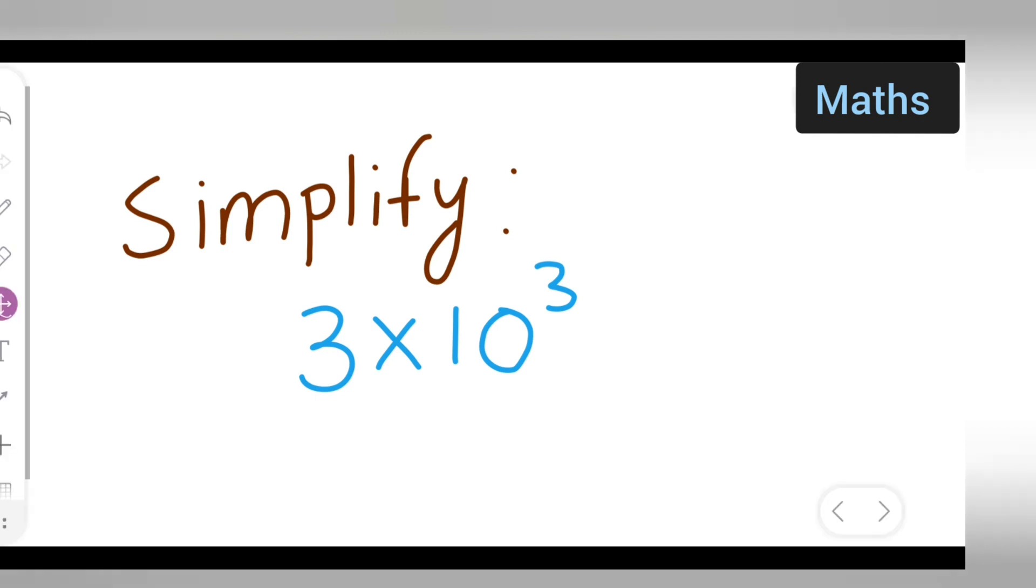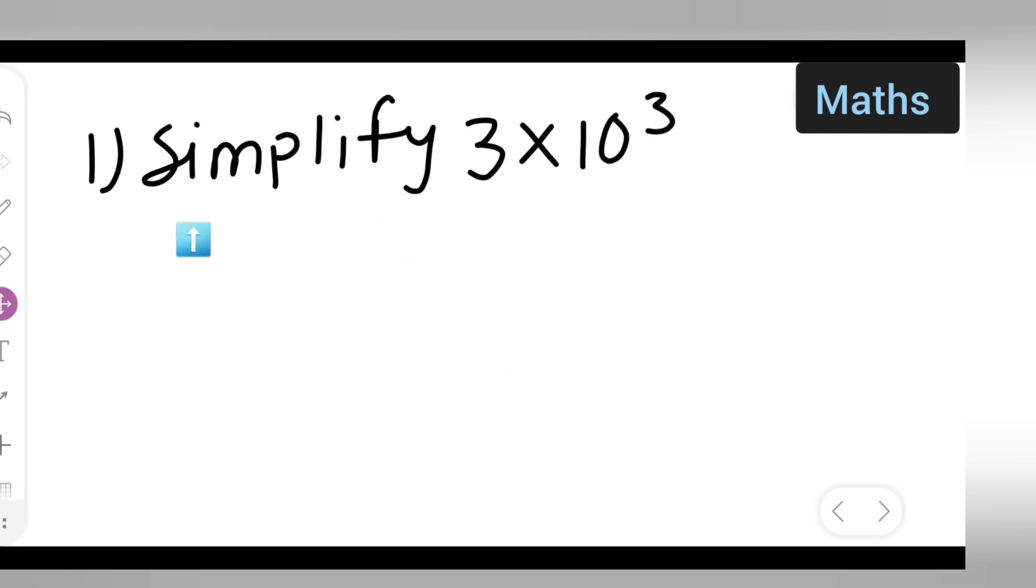Okay, so what you will have to do over here is first check down the question: simplify 3 multiplied by 10 raised to the power of 3. So how are you going to do this?